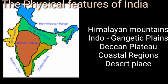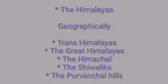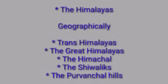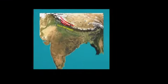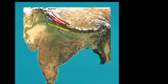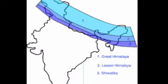The first division is the Himalayan mountains. You can observe it in the picture. The Himalayas stretch for a distance of 2400 kilometers. Geographically, the Himalayas are divided into: Trans-Himalayas, the Great Himalayas, the Himachal or Lesser Himalayas, the Shivaliks, and the Purwanchal Hills. The Trans-Himalayas, which are north of the Great Himalayan range, are also called the Tibetan Himalayas.